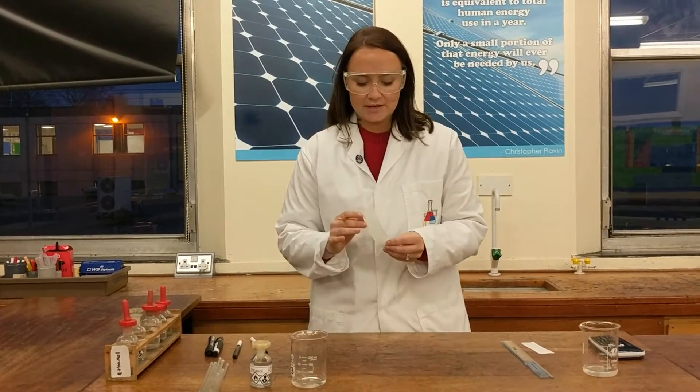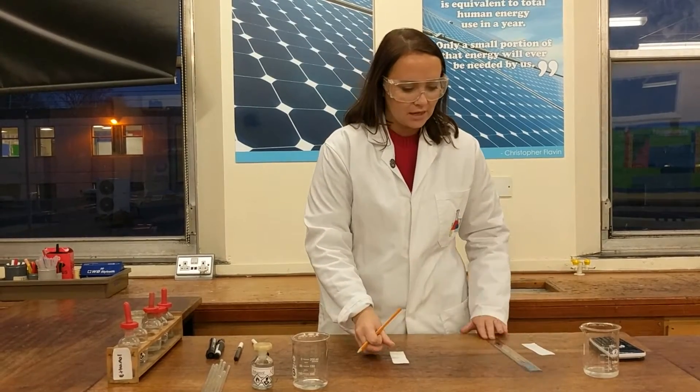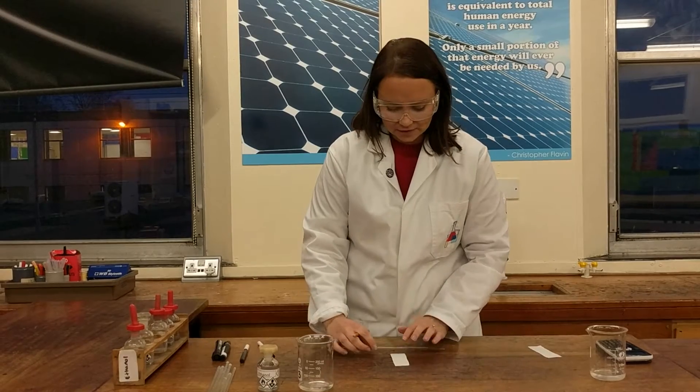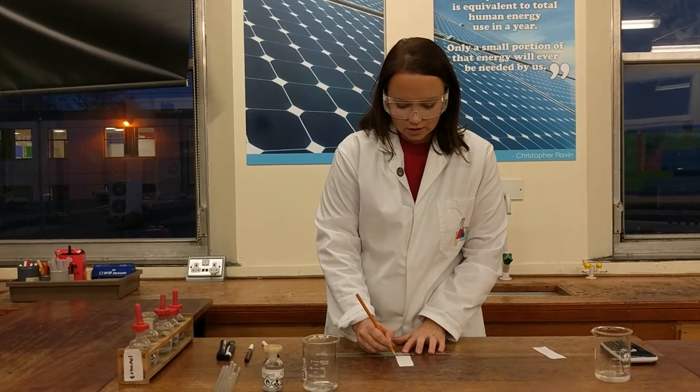So for chromatography you need a piece of chromatography paper, which is more absorbent than normal paper. Get a ruler to set it up, and about one centimetre from the bottom you will draw a pencil line.